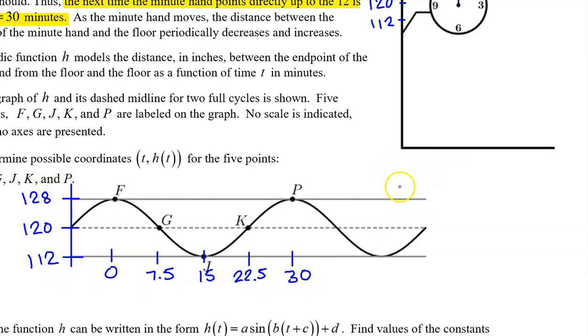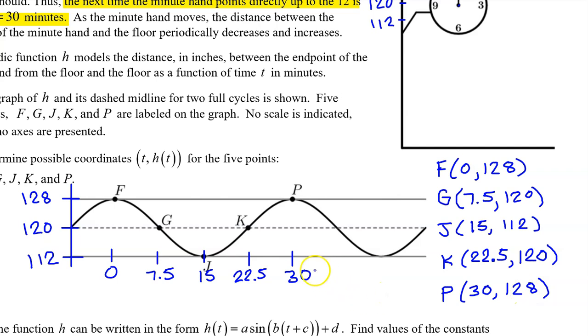Now that we have all of the input coordinates and the output coordinates, we can begin to list all of the coordinates for each of the five points. Point F is at (0, 128). Point G is at (7.5, 120). Point J is at (15, 112). Point K is at (22.5, 120). And point P is at (30, 128).